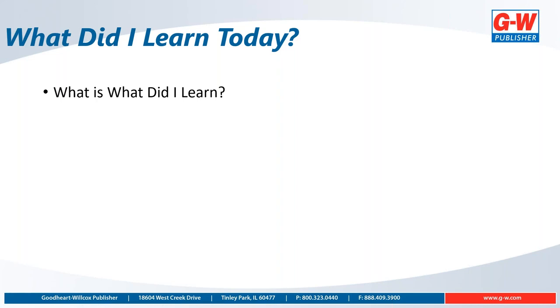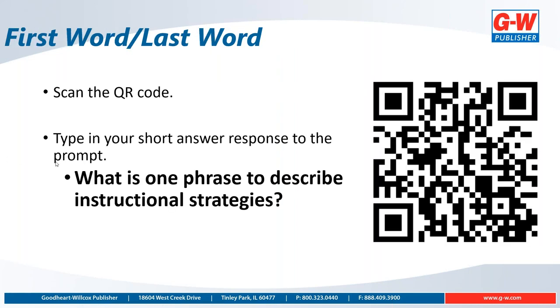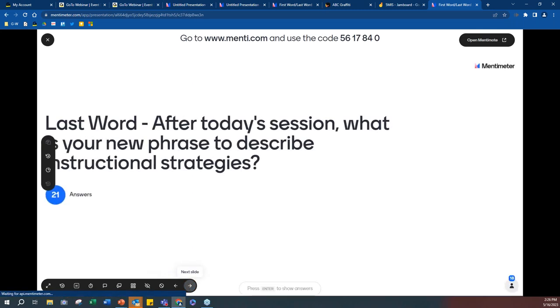Now we started with First Word Last Word and we've got to finish with the Last Word. Scan that QR code — once I jump over to Mentimeter I'll switch it to the Last Word. In the First Word you gave a phrase about what you currently think about instructional strategies. Now, after we've defined it as a group, talked about specific strategies, and completed the Frayer Model, we're going to put in our Last Word — a new description phrase about instructional strategies based on what we discussed today.